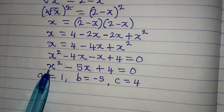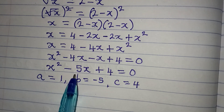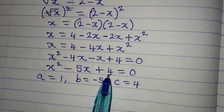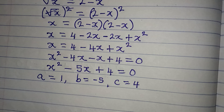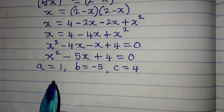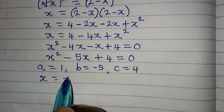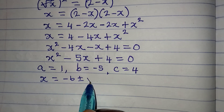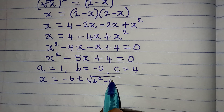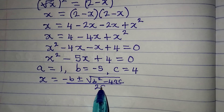Identifying the coefficients: a is the coefficient of x squared, which is 1; b is the coefficient of x, which is minus 5; and c is the constant, which is 4. The quadratic formula is: x equals minus b, plus or minus square root of b squared minus 4ac, all over 2a.